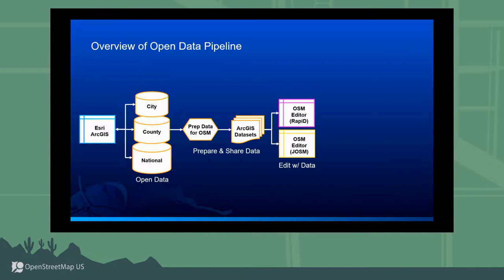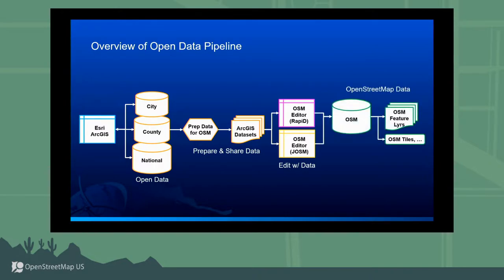The developers of Rapid and JOSM have integrated ArcGIS services into those OSM editors. In Rapid, for example, you can launch the managed datasets and find a set of these datasets, bring those into Rapid. Same thing with JOSM through the Maps with AI plugin. And then in those editors, you can edit by bringing in those features from ArcGIS and pushing them into OpenStreetMap. As those features are edited in Rapid or JOSM, they then flow immediately into OSM.